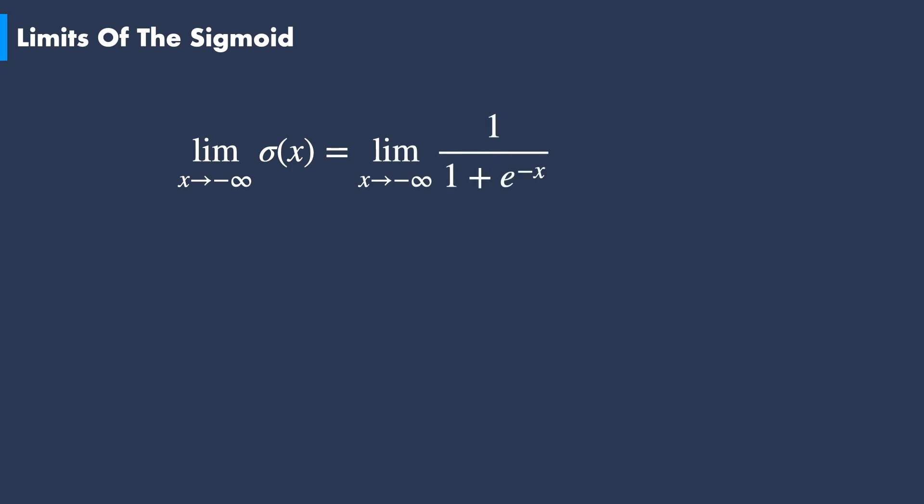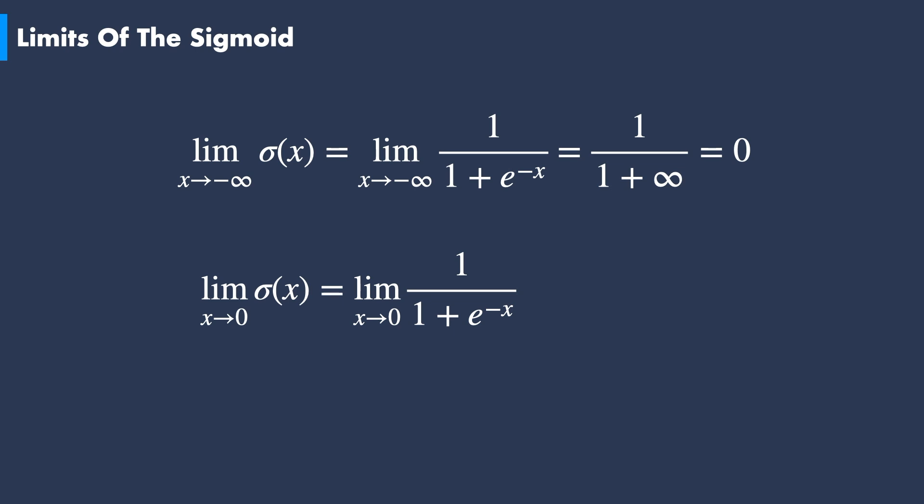Based on the limits of the inverse of the exponential, we can now compute the limits of the sigmoid function. When x takes negative values, we already know that the inverse of the exponential goes toward plus infinity. Since the rest of the terms are constant, we end up with 1 over infinity, which goes toward 0. This means the sigmoid function goes toward 0 when x is negative. Now when x goes toward 0, the inverse exponential goes toward 1, so we end up with 1 over 1 plus 1, which is equal to 0.5. Consequently, when x equals 0, the sigmoid function takes the value of 0.5.